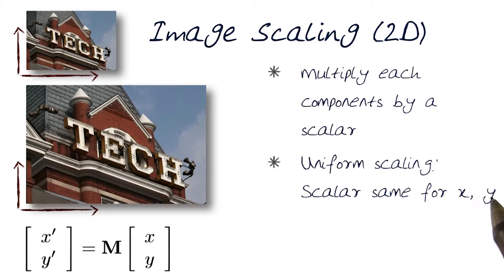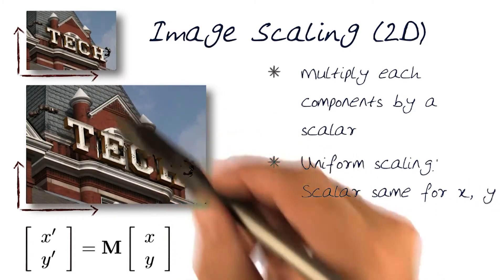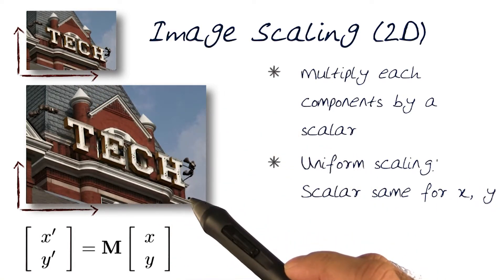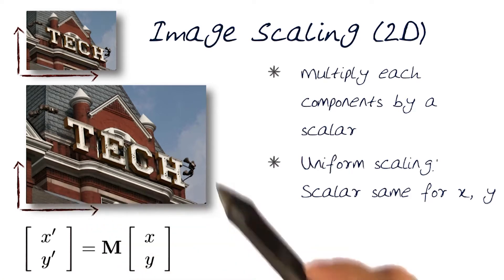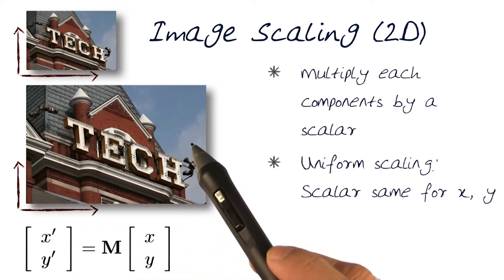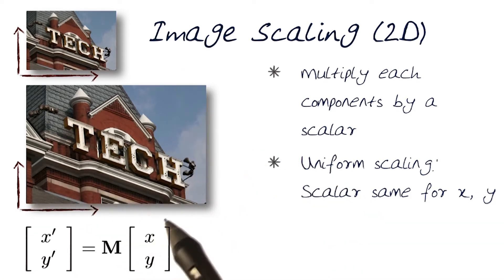The difference, of course, is if they're not the same, you would get a different aspect ratio. So let's say if I multiply all of the x's by one, I would get the same width. But if I multiply all the y's by two, I would get a different height.